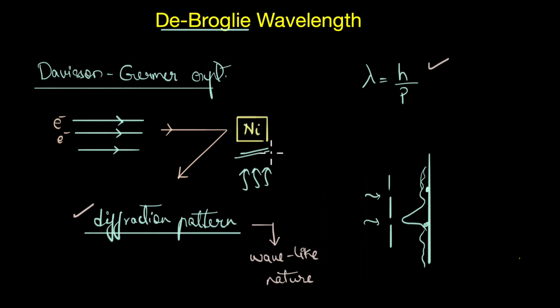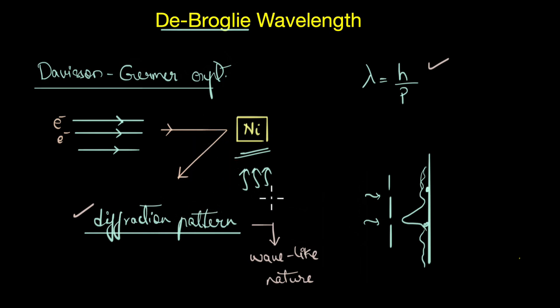Now you might wonder, we used the same nickel target in both cases. How did we obtain a diffraction pattern in the second case? Well, turns out that they did not get a diffraction pattern the first time because the nickel target that was used was made up of many tiny crystals.